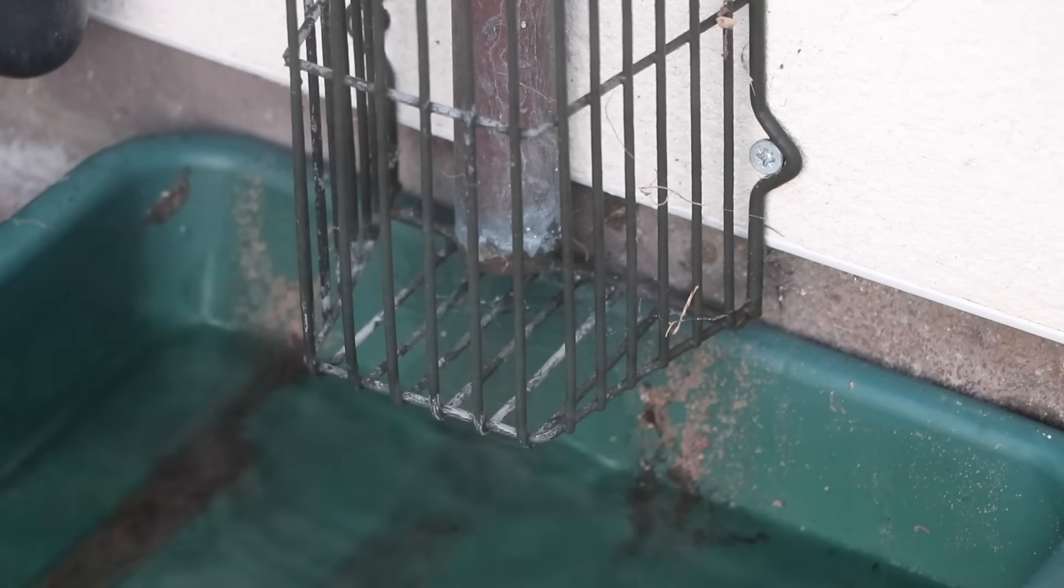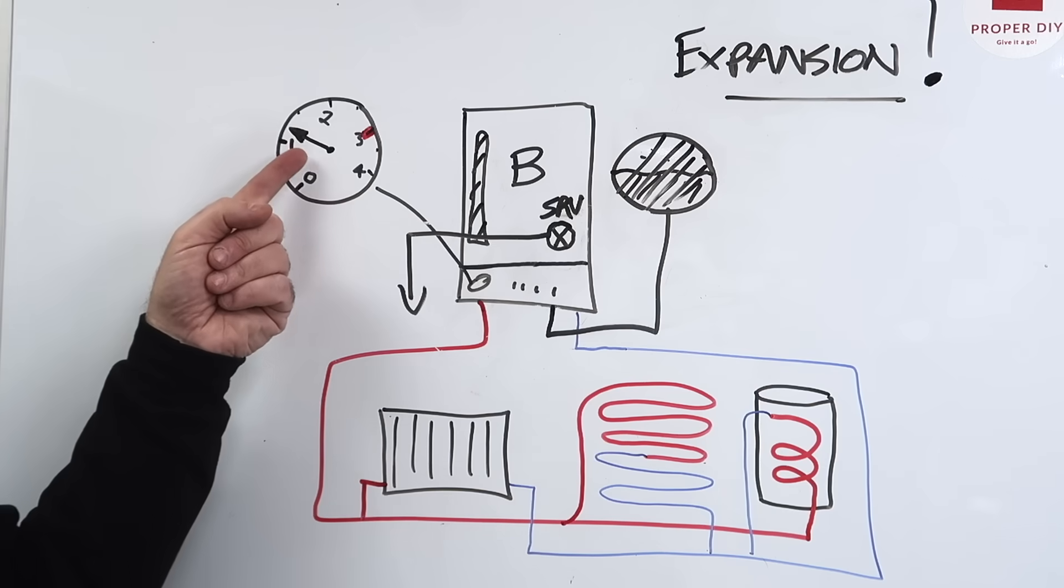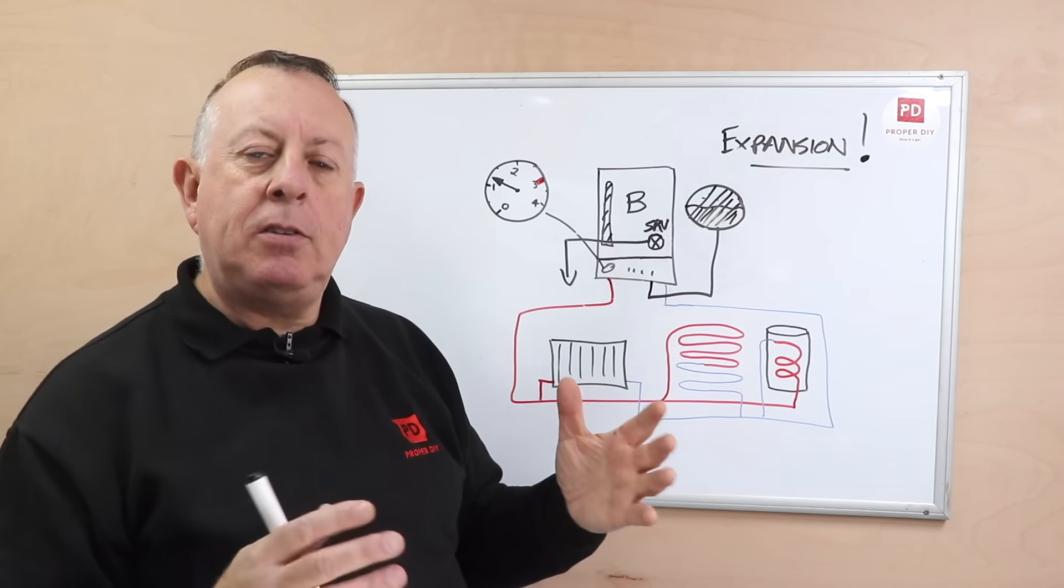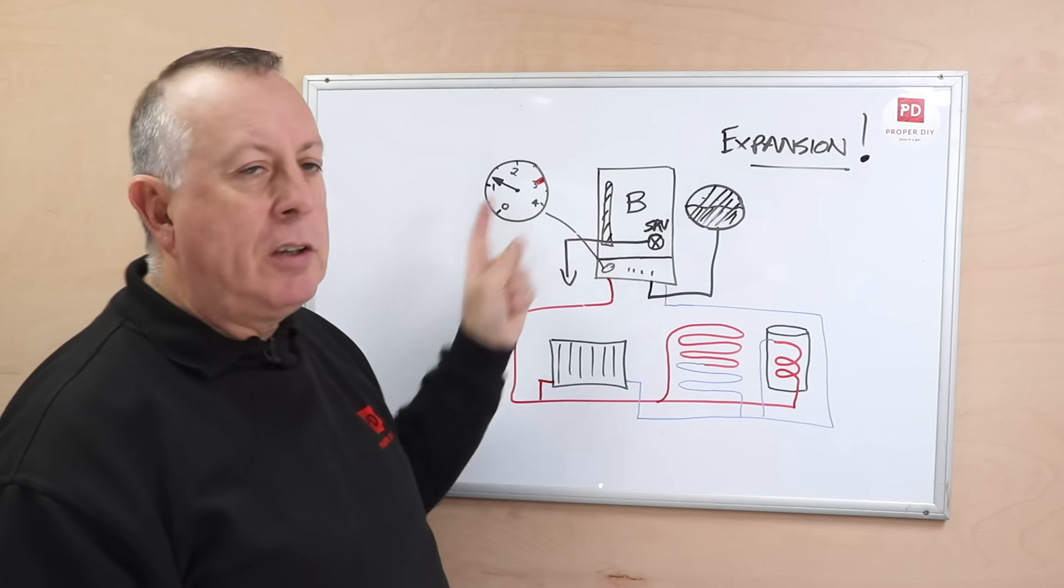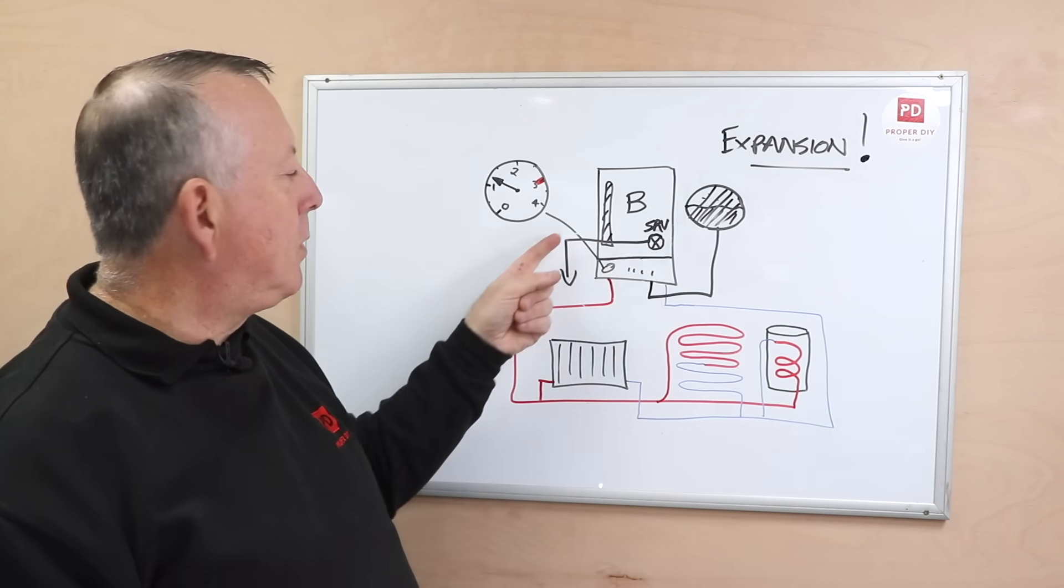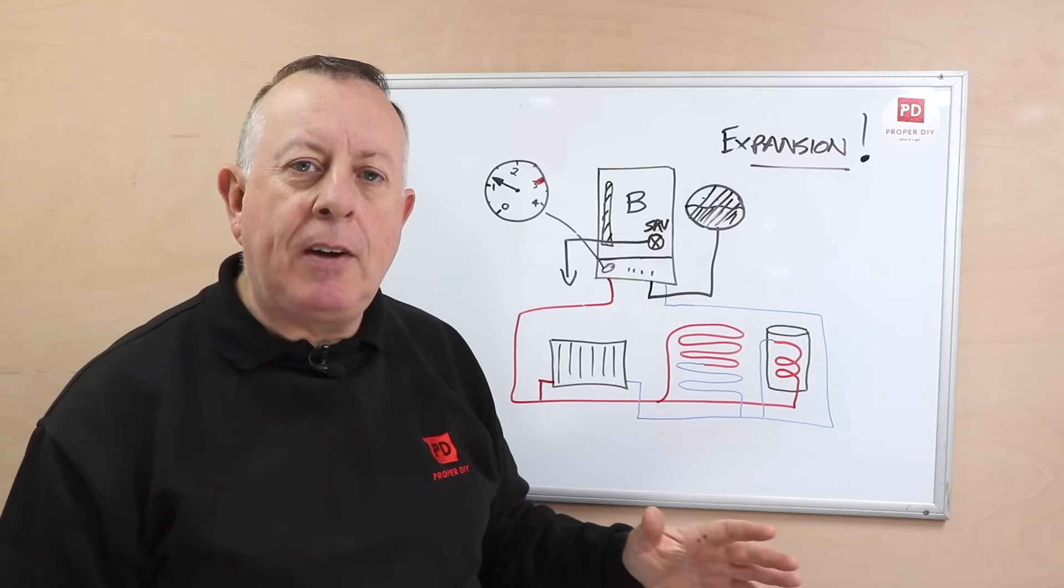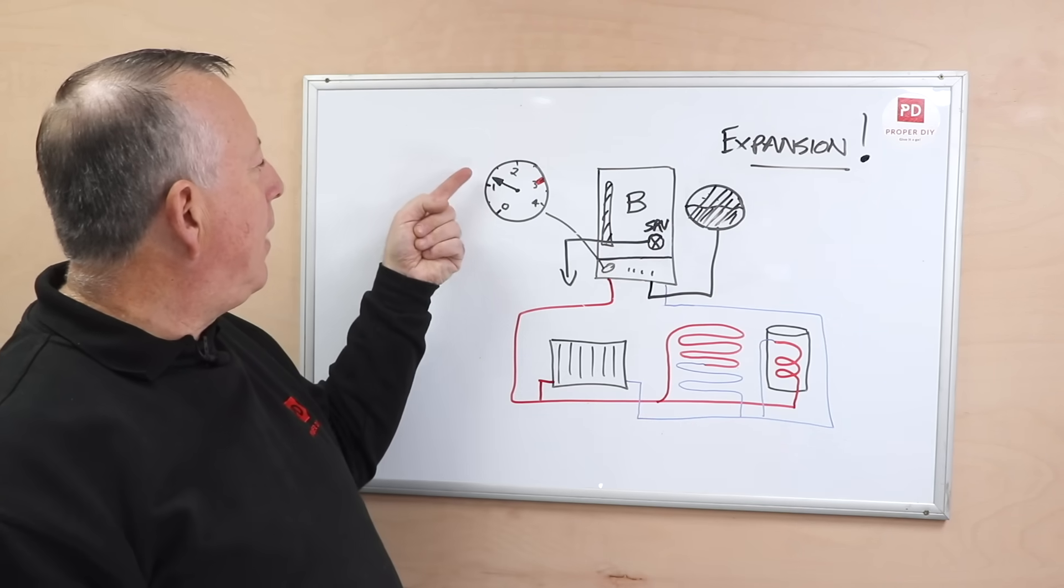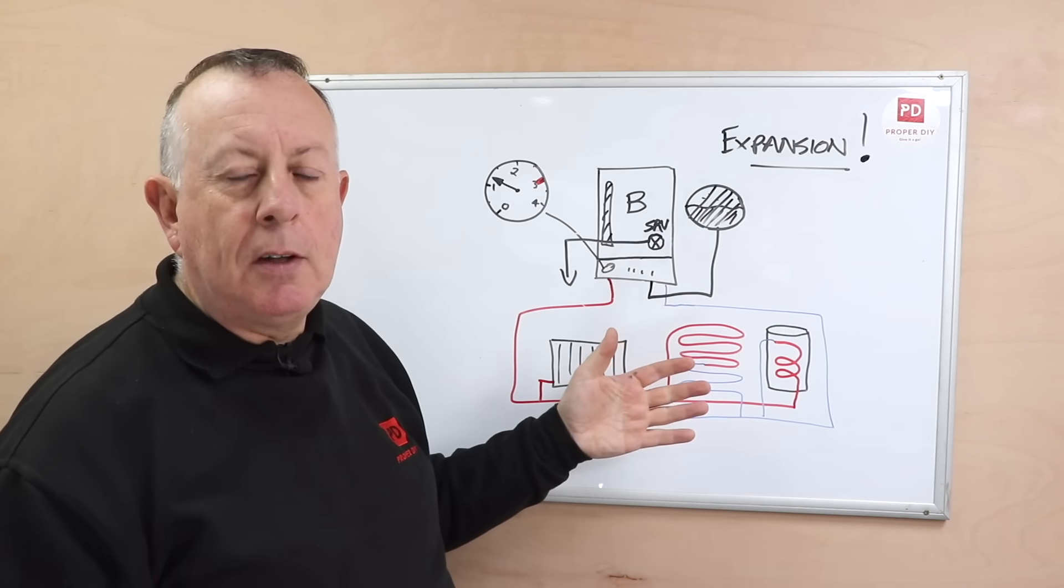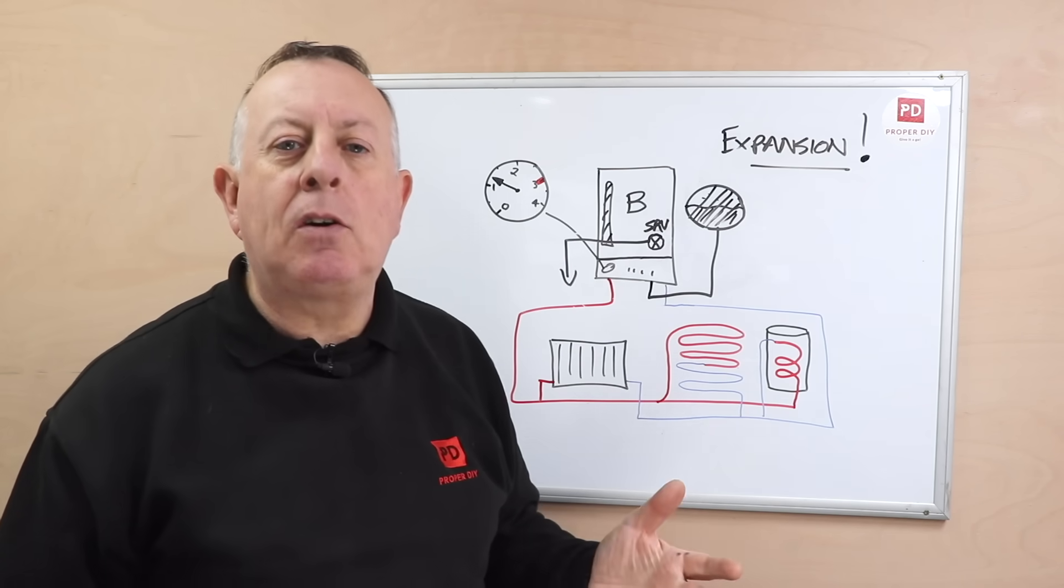So if you have a failed expansion tank, what you'll find is when the system is off it's easy to pressurize it to the right pressure, which is one to one and a half bar. But as soon as you turn it on, the water's got nowhere to expand to, the safety relief valve kicks in and it will dump water out of the vent out the back of your house. Once the system is turned off again and everything's cooled down, you'll find that that pressure is now a lot lower because it's got rid of water in the system, and the tray that you put out the back of your house underneath the vent has now got water in it.